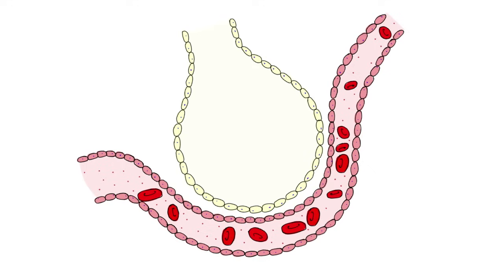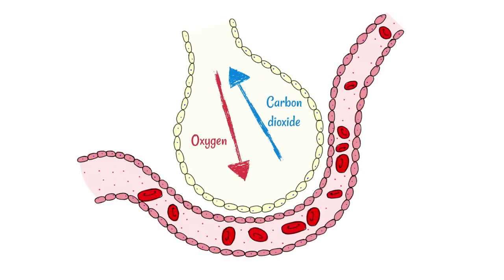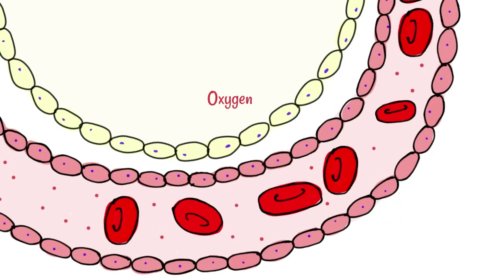If we see it here represented in more of a diagram format, we can see what's going on. First of all, oxygen and carbon dioxide are constantly being supplied and removed through breathing. Let's look a little bit closer at the lining — notice that it's only one cell thick.